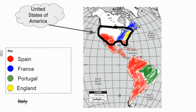This video picks up where the last one left off. If you remember, during the last video we talked about the fact that Spain claimed a lot of land in the Americas, France claimed some land, Portugal claimed some land, and eventually England will claim some land. But we are now focusing in on the main goal, which is our country, the United States of America.